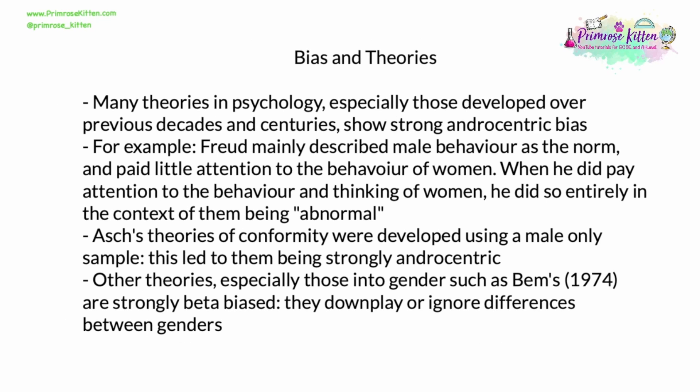Many theories developed in psychology, especially over previous decades or centuries, show strong androcentric bias — mostly because androcentrism was the cultural and social norm of the day. For example, Sigmund Freud mainly described male behaviour as the norm and paid little or no attention to the behaviour of women. When he did address women's behaviour and thinking patterns, he did so in the misguided context of them being abnormal. Asch's theories of conformity were developed using a male-only sample, making them strongly, even completely, androcentric. Some other theories, especially those addressing intergender topics — such as BEM in 1974 — are strongly beta biased, downplaying or ignoring differences between genders. Quite often that comes from the best of intentions, but they are still biased.